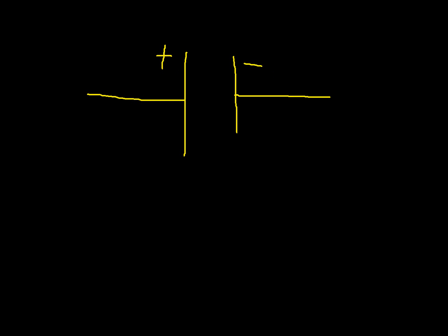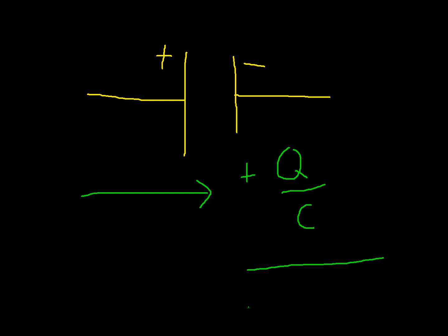Next we will take the capacitor. Let's say these are the two plates of the capacitor. Assume this is the positive plate and this is the negative plate. If you are travelling in such a way that you meet the positive plate first, add plus Q over C to the equation. If you meet the negative plate first, subtract Q over C from the equation. Q is the charge on the capacitor and C is the capacitance.